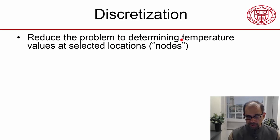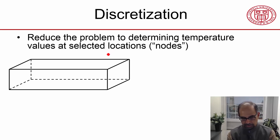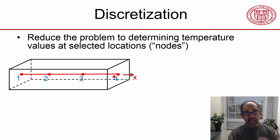We reduce the problem to determining temperature values at selected locations. That's the bar I have and I need to determine the temperature along that line. I've reduced it to a one dimensional problem, so I need to determine temperature only along the line. So I need to determine the function t of x.